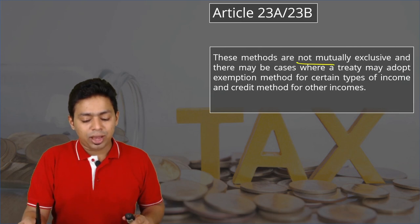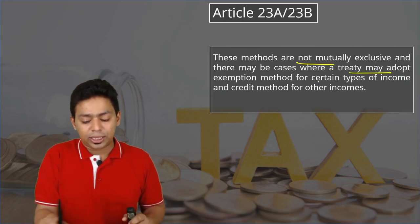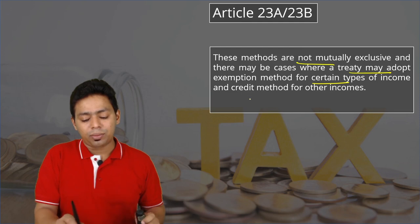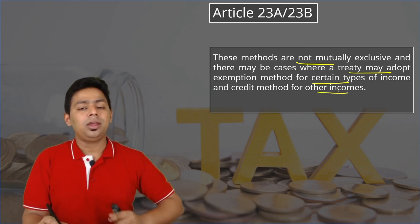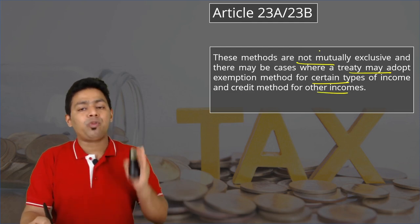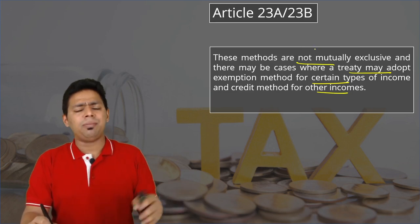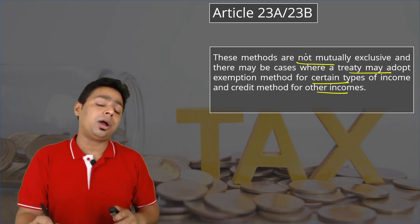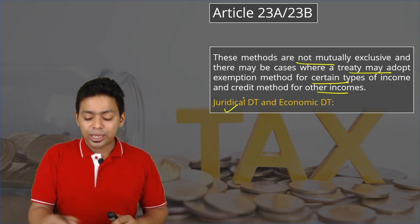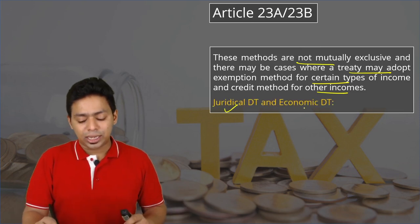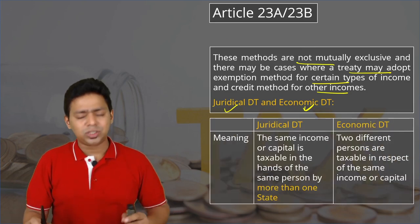These methods are not mutually exclusive. There are many cases where a treaty may adopt the exemption method for certain types of income and the credit method for other types of income. It is not that you have to follow one method for all income — for every type of income you can choose the method.